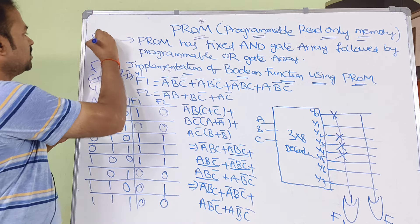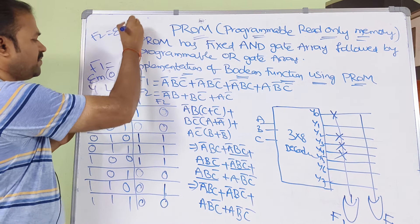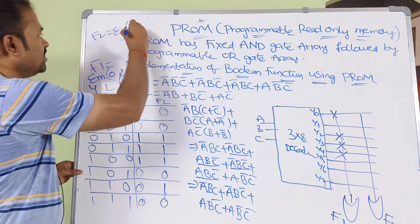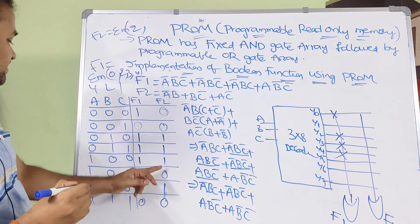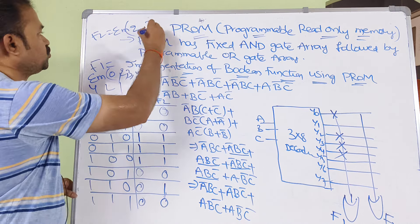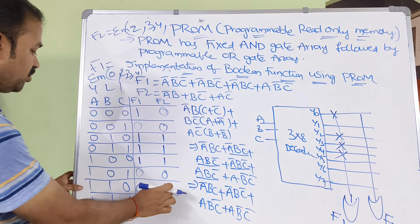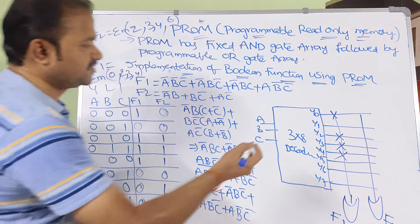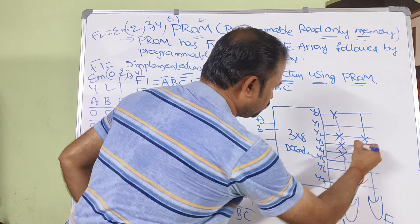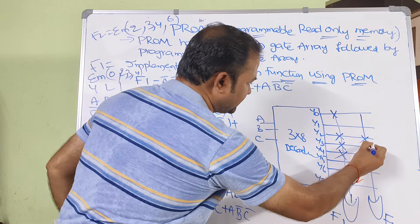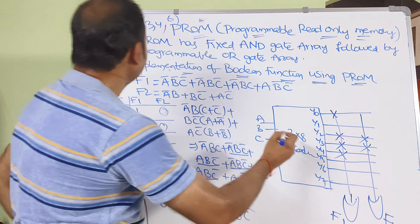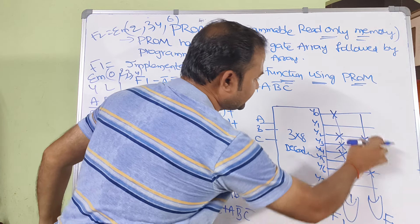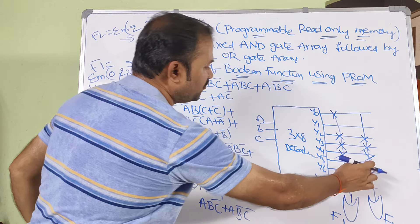For F2, we place cross marks at minterms 2, 3, 4, and 6. So F2 = Σm(2, 3, 4, 6). We put cross marks at Y2, Y3, Y4, and Y6 for the F2 OR gate.